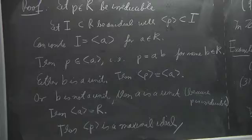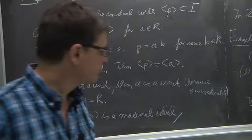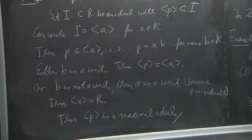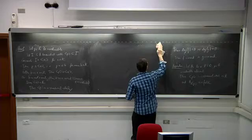We want to use this to construct new fields from old using polynomials. If we are given an irreducible polynomial, we get in this way a field. Corollary: let K be a field and F an irreducible polynomial in K[x].